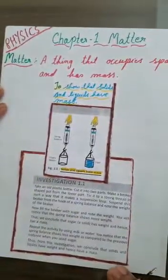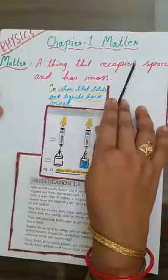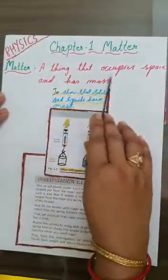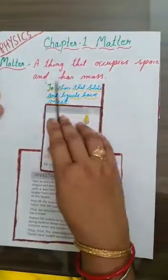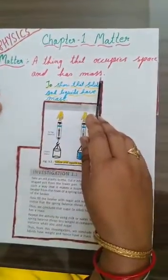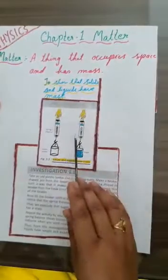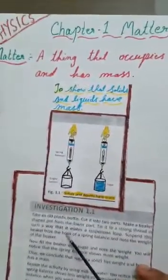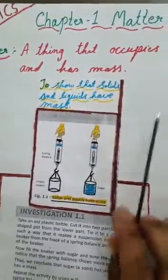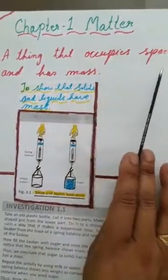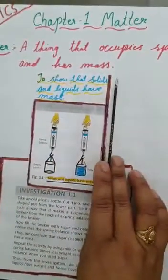Now what is matter? This is our chapter one: matter. To understand what is matter - matter is a thing that occupies space and has mass. To understand this matter we will perform some activities. First, I have said that a thing occupies space and has mass.